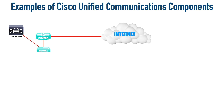CUCM is essentially a PBX replacement. It's going to make our call forwarding decisions. We can set up restrictions as to what device can call what other device. We can set up route plans to determine what digits get forwarded to the PSTN, what digits get displayed on our phone. We can have users associated with those phones. Most of our configuration in this course is going to be done on Cisco Unified Communications Manager — it's really the star of the show when it comes to Cisco Unified Communications.